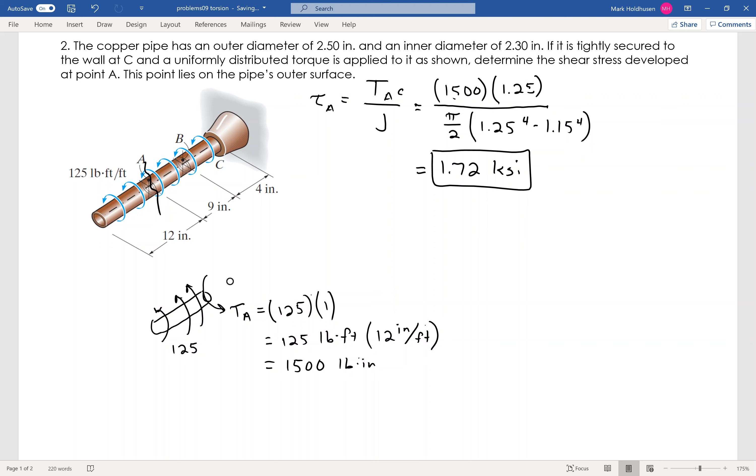which is the distance from the center, which for this will be the radius, since it's on the outside. And then I divide that by the polar moment of inertia, which is, for a tube, going to be pi over 2 times the outer radius to the fourth minus the inner radius to the fourth.